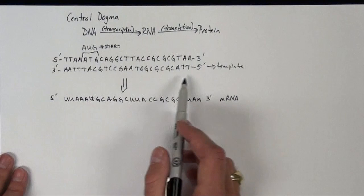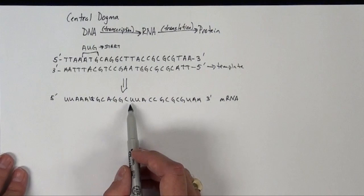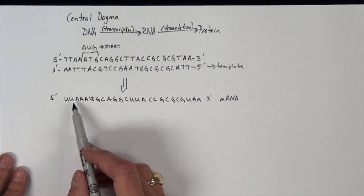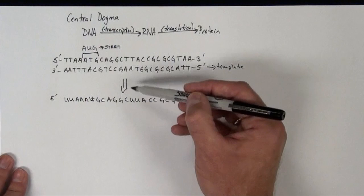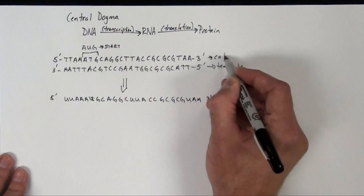That also means this top strand is actually identical to the mRNA that was produced, but instead of thymines, the RNA has uracils. So we don't have thymines in RNA, we just have uracils. But these two strands are identical in terms of their alphabet except for the T's and U's. So we actually would define this as the coding strand.